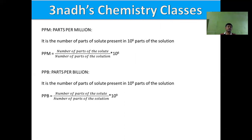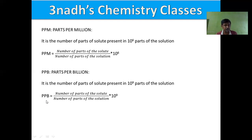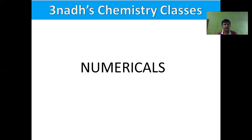Parts per million (PPM) is the number of parts of solute present in 10⁶ parts of the solution. In examinations — specifically the Intermediate Public Examination (IPE) — there is a good chance that one numerical will be asked from concentration determination methods, so we need to focus on numericals.